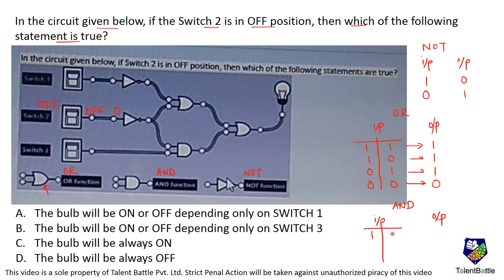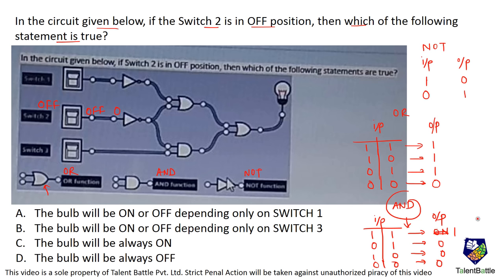For the AND function, if both inputs are 1 — on and on — output is 1. If any one input is 0 or both are 0, output is always 0. To get output 1 from an AND gate, both inputs must be 1.